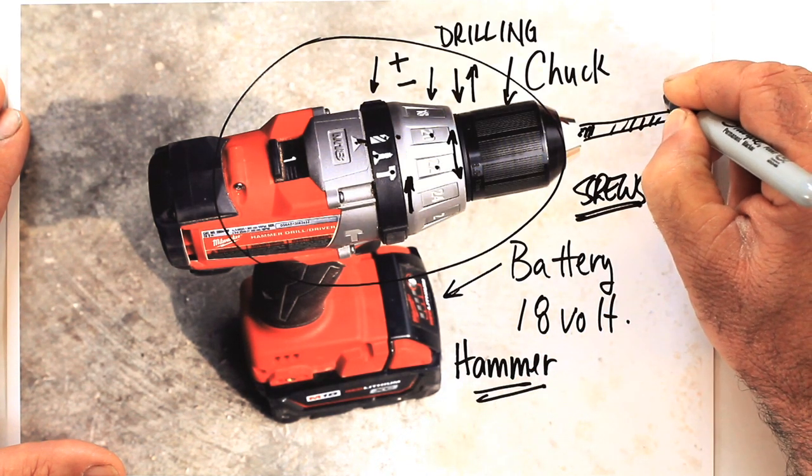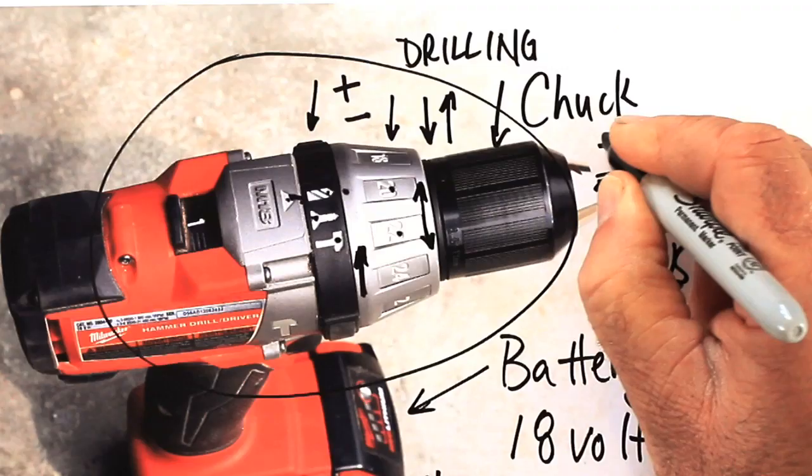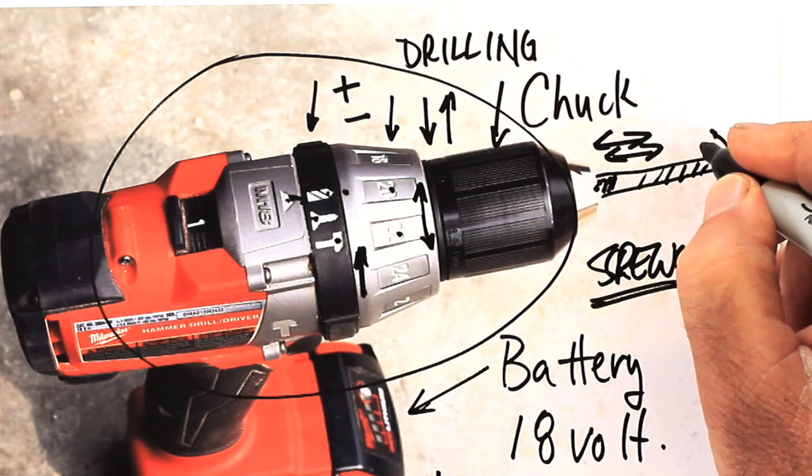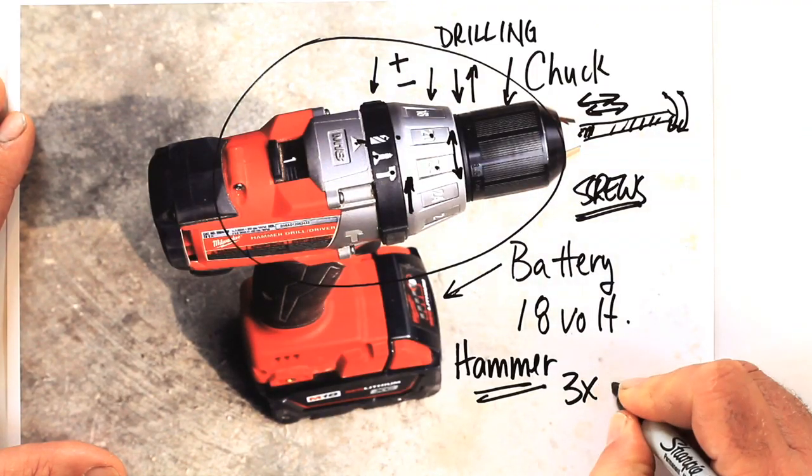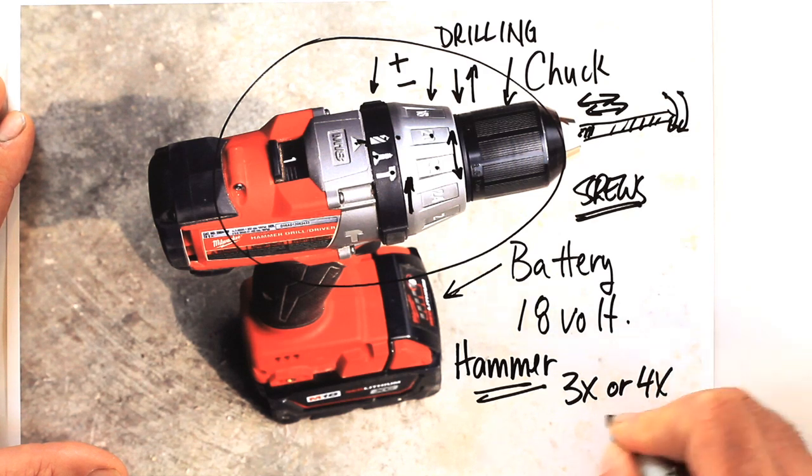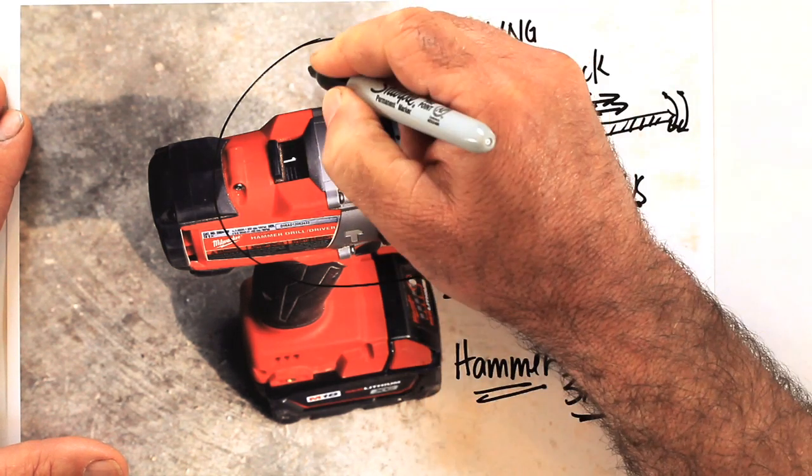What happens is the drill bit rotates just as it normally does, but it also vibrates back and forth in a short stroke way, many times a second. And that makes for a much quicker drilling action in any kind of masonry, at least three or four times as fast. So it's really a worthwhile feature in a general purpose drill.